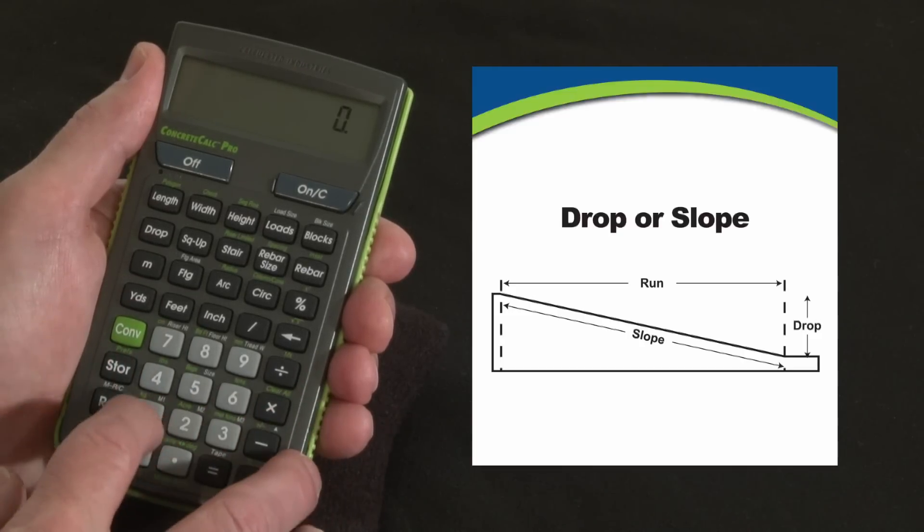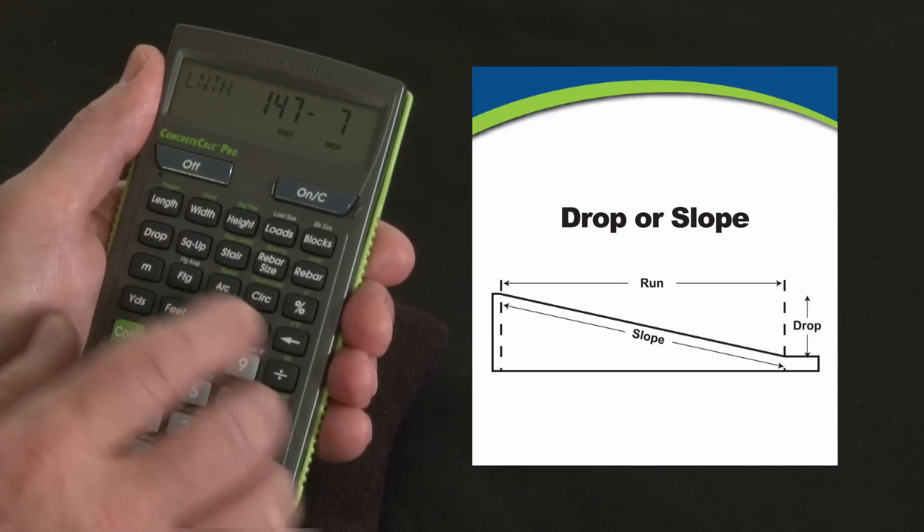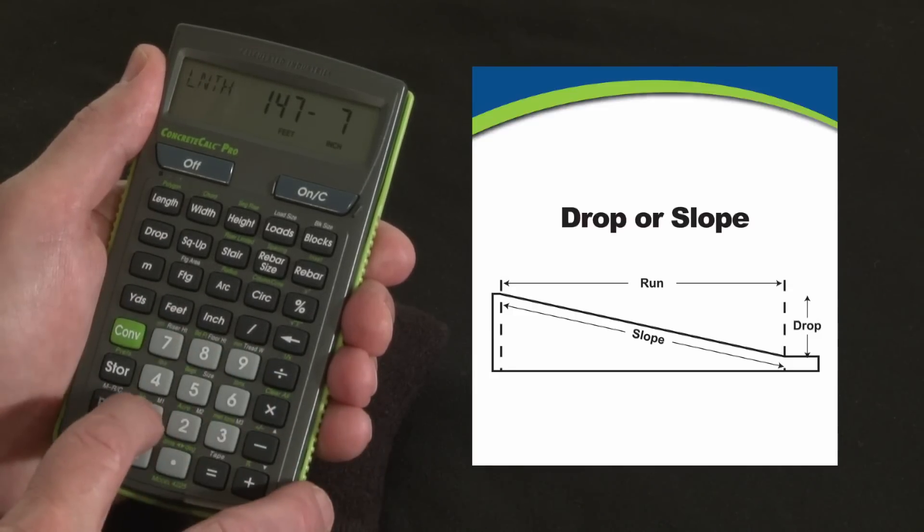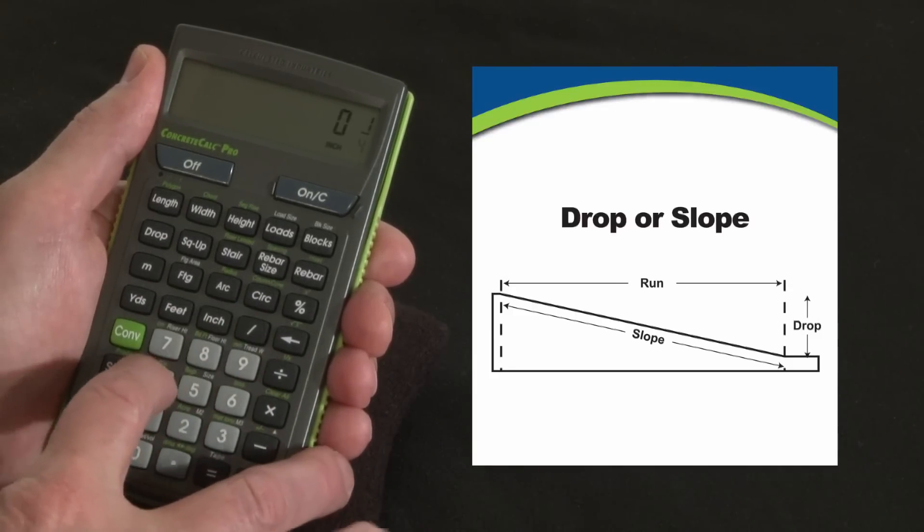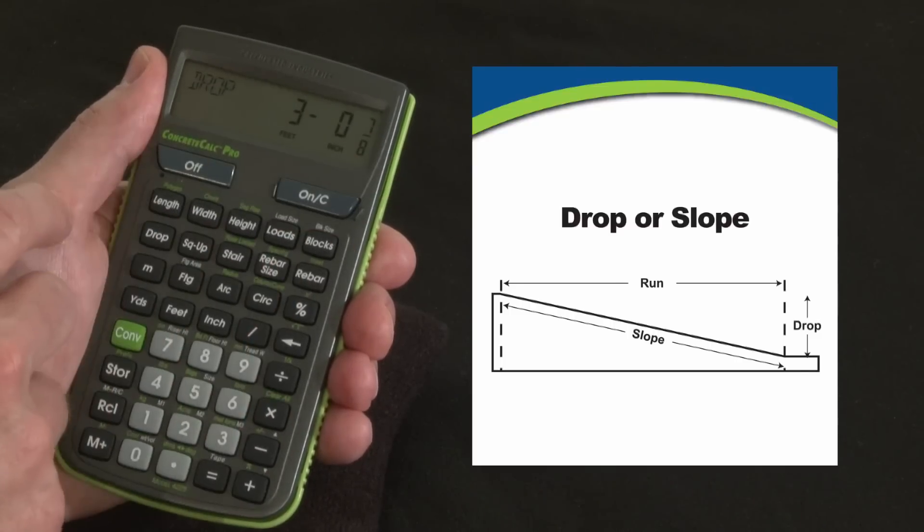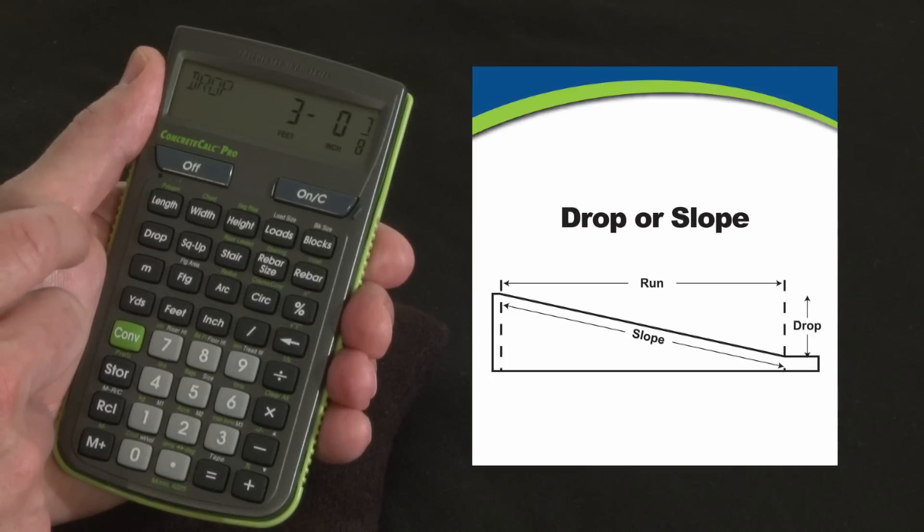Let's say we've got a 147 foot 7 inch long driveway, it's a very long driveway, and we want it to drain off at maybe a quarter inch per foot. So let's go 1 slash quarter is my drop. Press it again. So there at the far end of this long driveway it's going to be 3 foot 7 and 7/8 inch lower than where I am at this end.